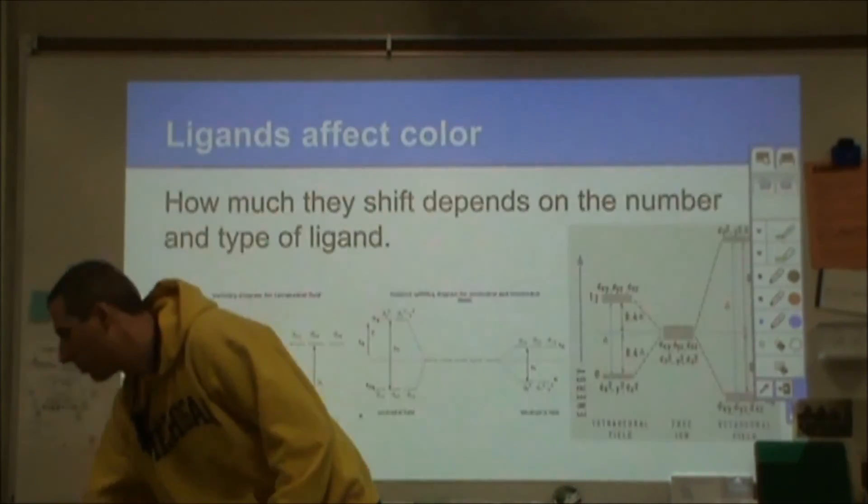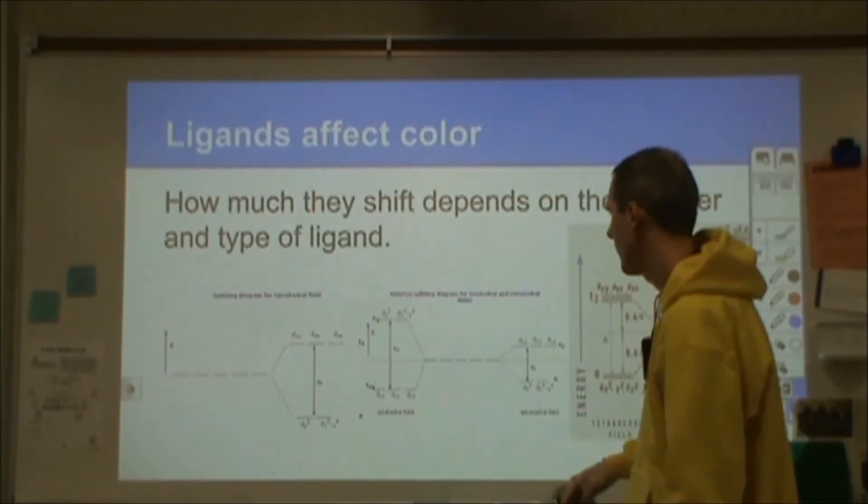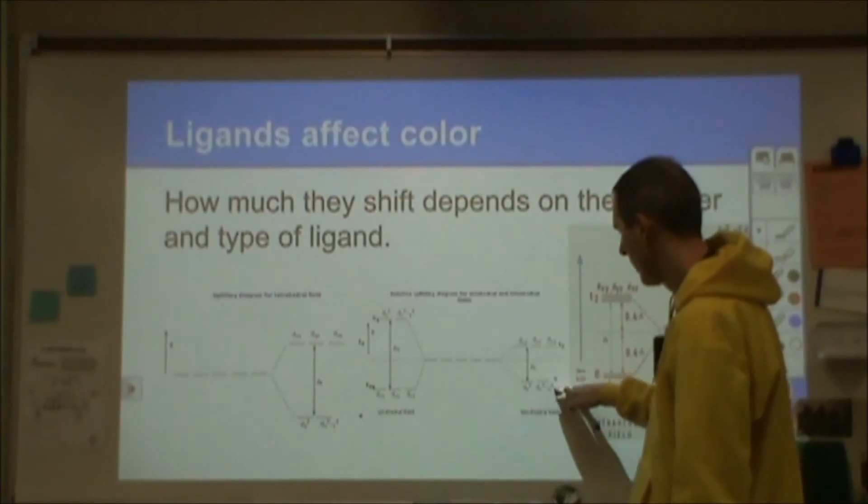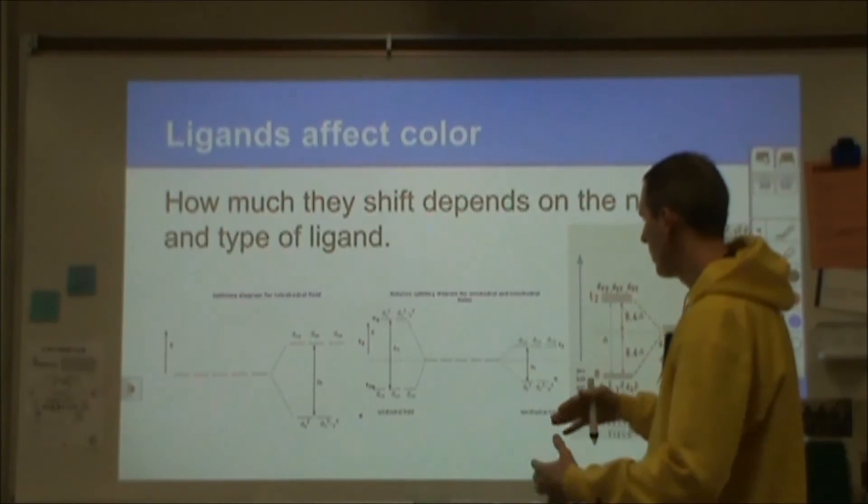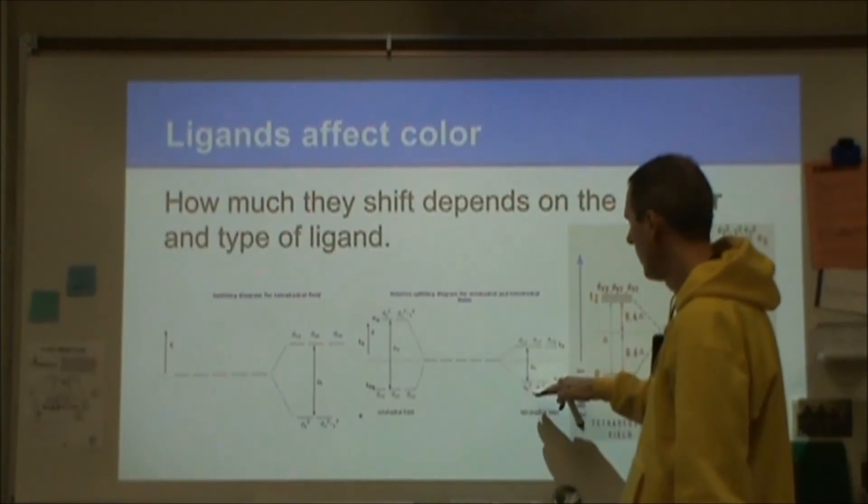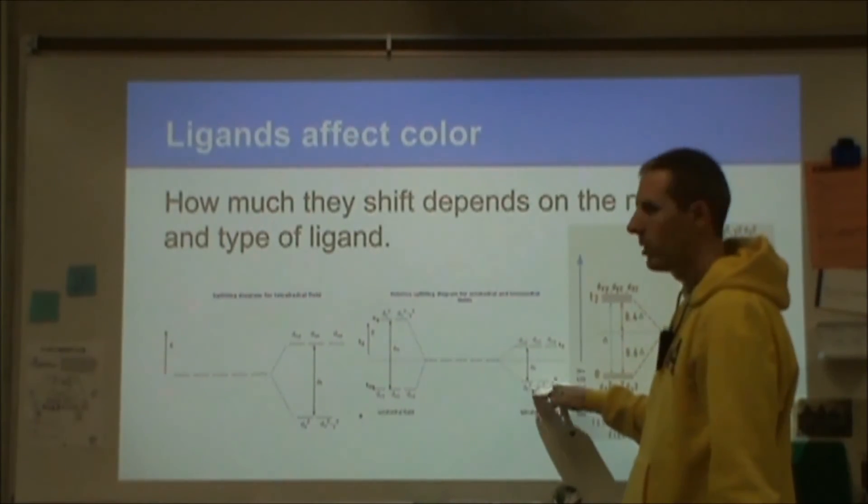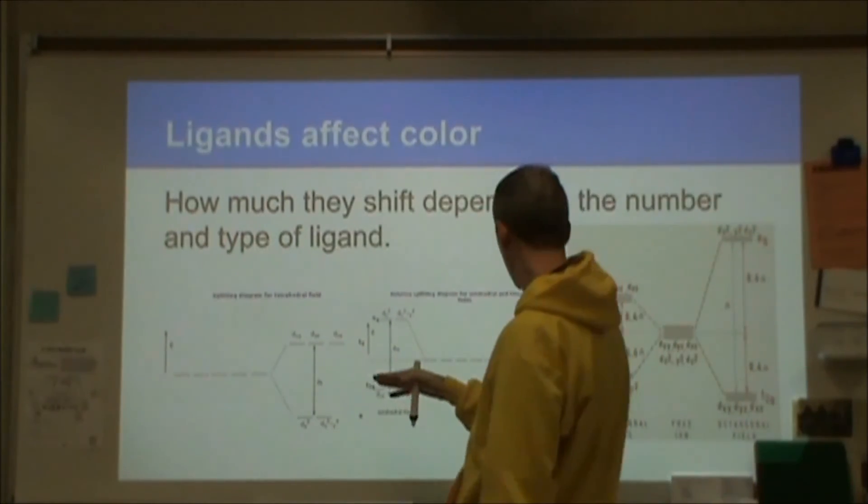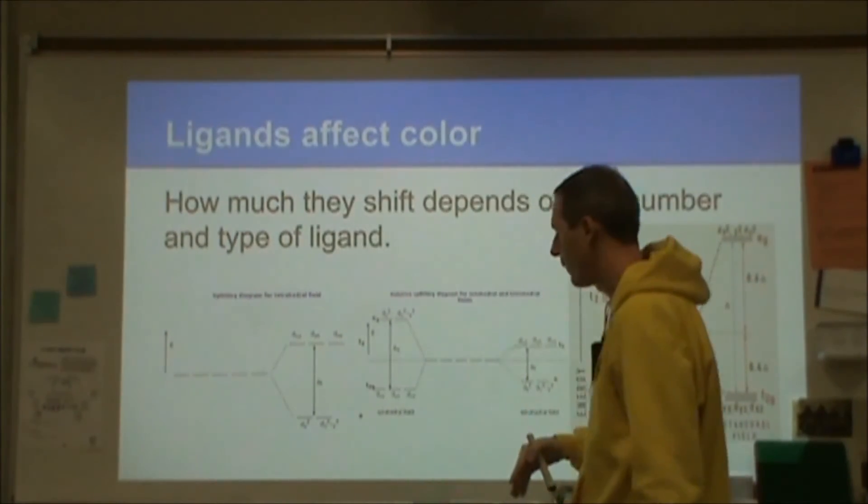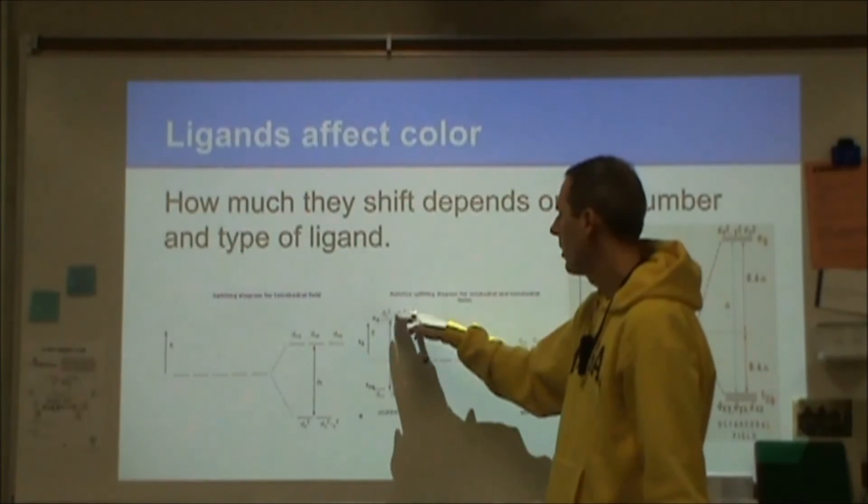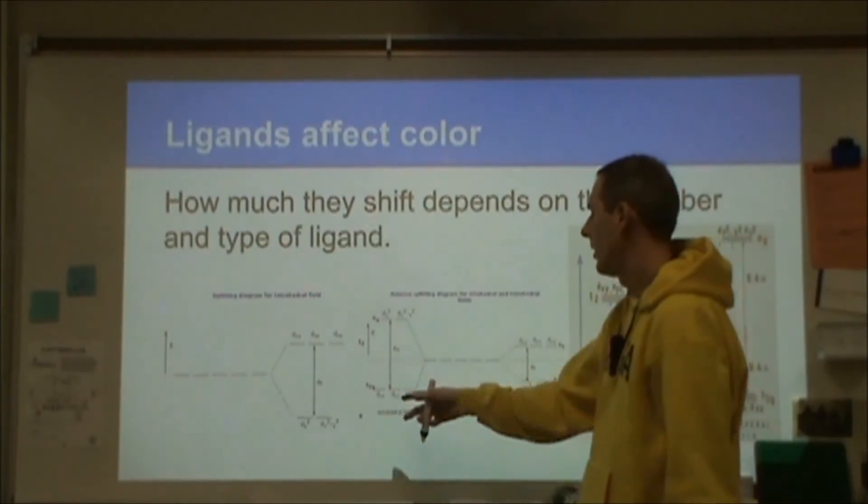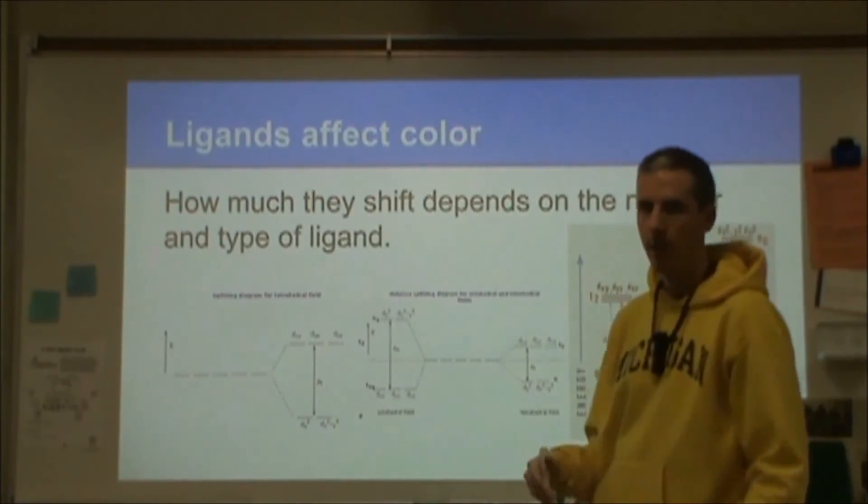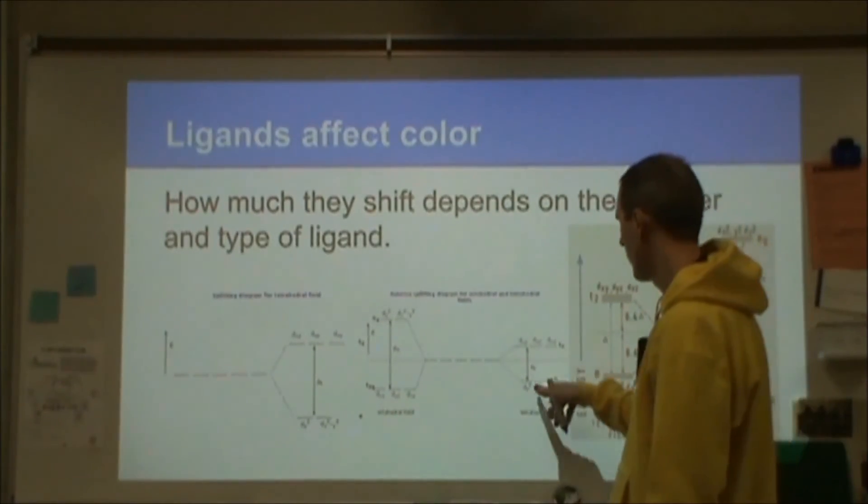How you split also depends upon the shape of the ligands. If you have a tetrahedral splitting, that's going to be different than an octahedral splitting. You can see that here. This is a tetrahedral field. Here we have the three that are in between the axes going up in energy and the other ones are going down in energy, the ones along the axes. That's flipped over here for an octahedral field.